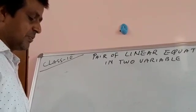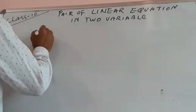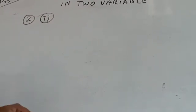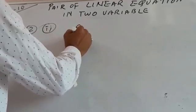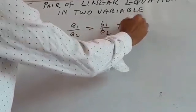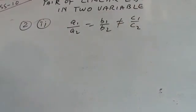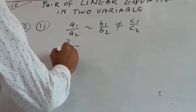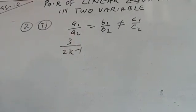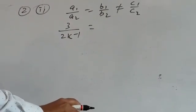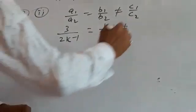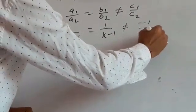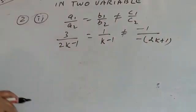Question 2 asks: for which value of k will the following pair of linear equations have no solution? For no solution, the condition is a1/a2 = b1/b2 ≠ c1/c2. Here a1/a2 = 3/(2k−1), b1/b2 = 1/(k−1), c1/c2 = (−1)/(−(2k+1)). We equate a1/a2 = b1/b2 to find k.